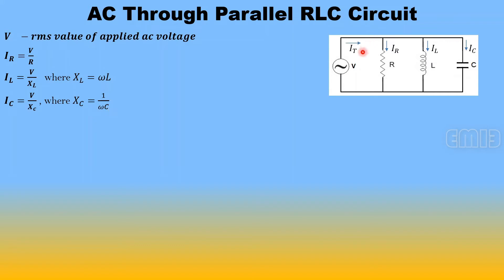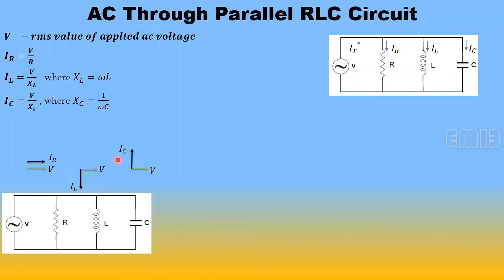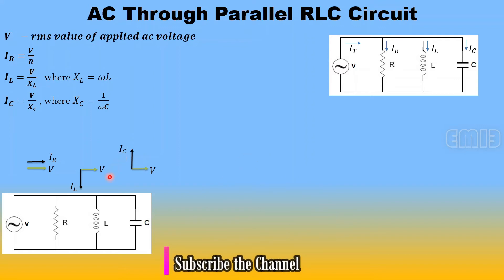Let IT be the total current from the voltage source. When an alternating voltage is applied across a resistance, the current IR and applied voltage are in phase. In the inductance, IL lags the applied voltage by 90 degrees. In the capacitance, the current leads the applied voltage by 90 degrees. The currents IR, IL, and IC are in three different directions.